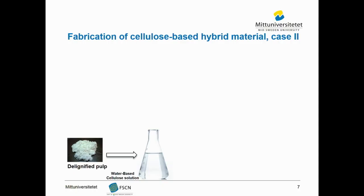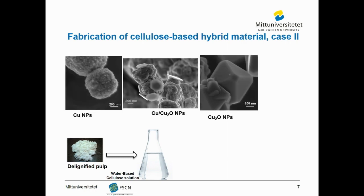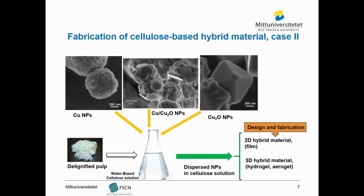Another approach we studied was to dissolve the cellulose in a water-based solvent and then synthesize a variety of nanoparticles — spherical copper nanoparticles, a mixture of copper and cuprous oxide nanoparticles, and also cuprous oxide nanoparticles with a specific morphology called octahedral structure, which is a semiconducting material. By dispersing these nanoparticles inside the cellulose solution using the right method, we can produce two-dimensional hybrid materials like films, as well as hydrogels and aerogels.